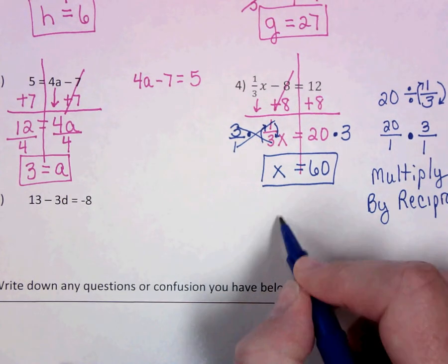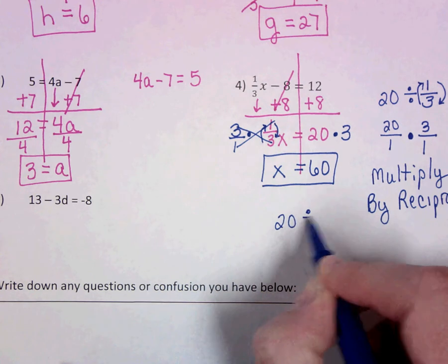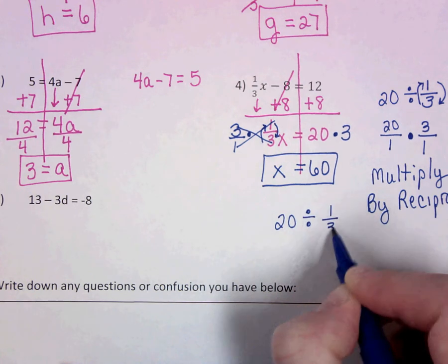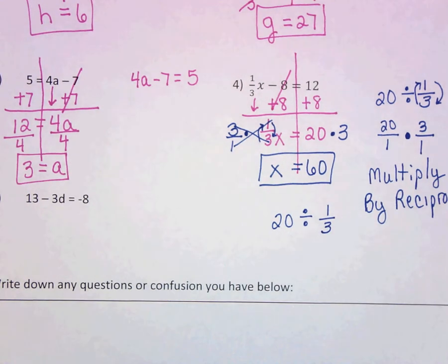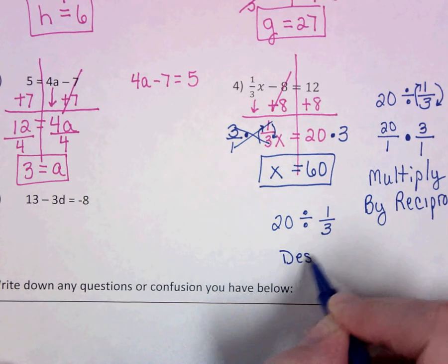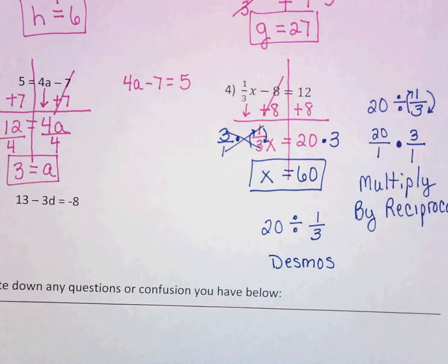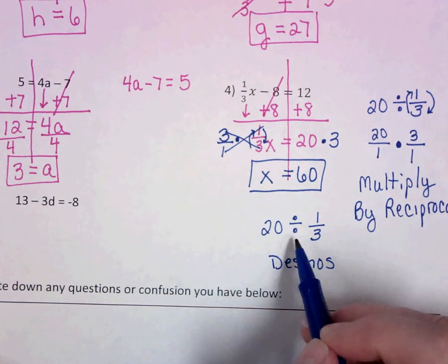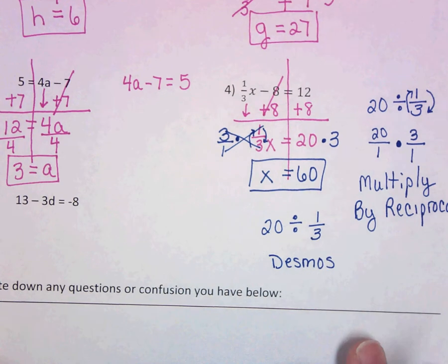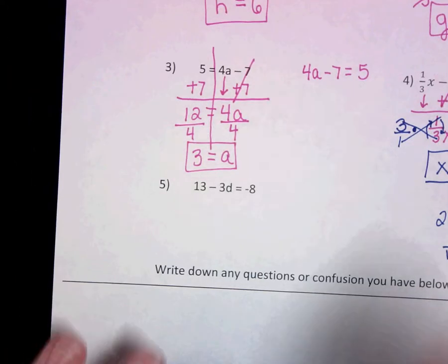Okay, I do want to note that you can type 20 divided by 1 third into your calculator, and it would work. You could get it to calculate it. So sometimes you don't even have to do the multiply by the reciprocal. You can just type it straight into your calculator like that. Okay, last one.